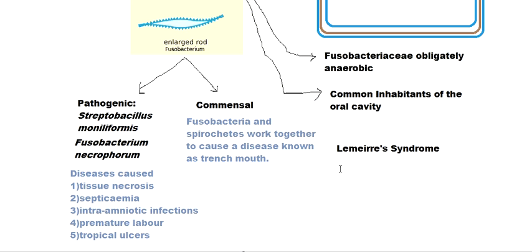Another important disease is rat bite fever, also called Haverhill fever. These are not two completely different diseases — their symptoms are the same and the causative pathogen is the same: Streptobacillus moniliformis.